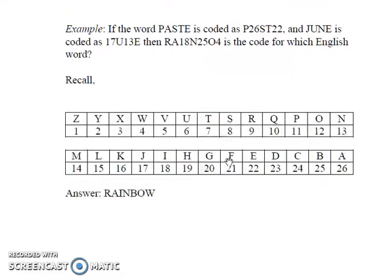Again going back to my last video, I showed a reverse order assignment of alphabets as shown here. The above mentioned codes follow the same scheme. A has been coded as 26 and E has been coded as 22. Similarly, in JUNE, J is coded as 17 and N is coded as 13.